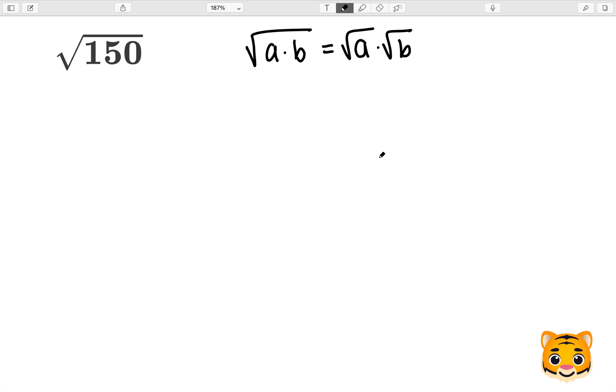This means that if we have two numbers multiplied by each other inside of a square root, we can then break up that square root into two square roots with multiplication in the middle. In order to apply this to the square root of 150, we first need to think of all the factors of 150.